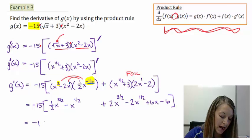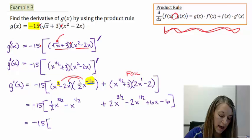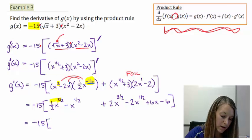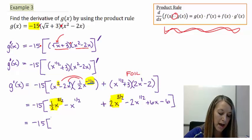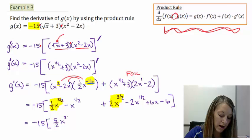So all I have to do is add like terms. So I have one-half x to the three-halves plus 2x to the three-halves. So I add my coefficients. Two plus one-half is two and one-half, or writing it as an improper fraction, five-halves x to the three-halves.